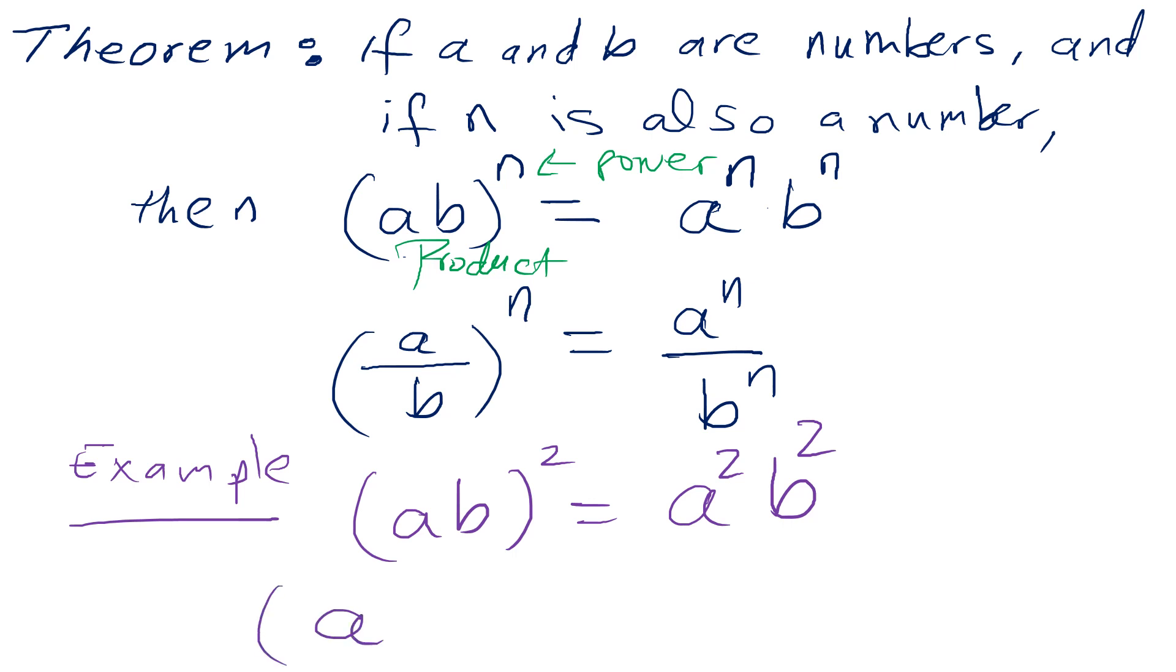However, if I have an operator, like addition in between, then this does not become a^2 plus b^2. It is not correct to do that, because as you see, the theorem is correct the way it comes. It can't be extended to this.